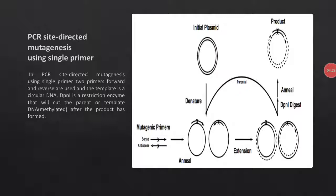PCR site-directed mutagenesis using a single primer: a PCR cycle involves three steps — denaturation, annealing, and extension. Denaturation is the first step, involving the breakdown of hydrogen bonds between double strands. PCR SDM using a single primer involves a circular double-stranded DNA molecule, just like a plasmid.